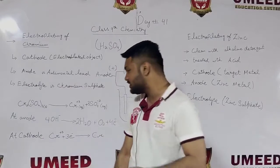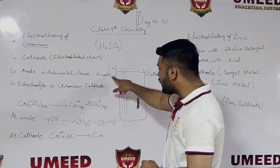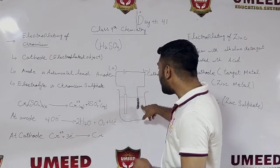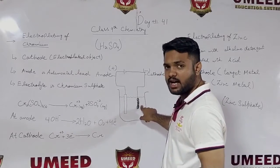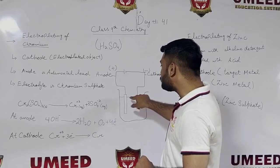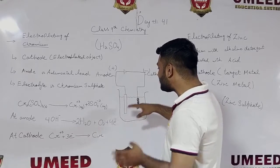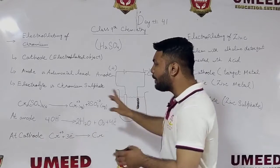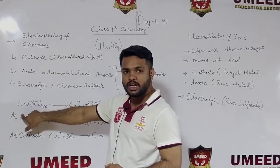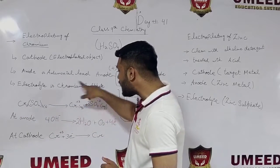Here the anode is made of chromium and the cathode is the object to be electroplated. The electroplated object sits at the cathode. Through the chromium electrolyte, the chromium sulphate solution facilitates the reaction where chromium ions travel along the way.